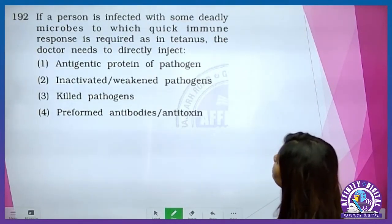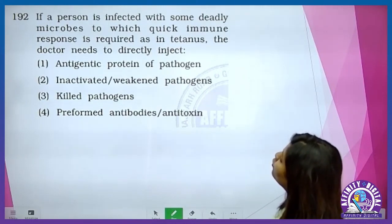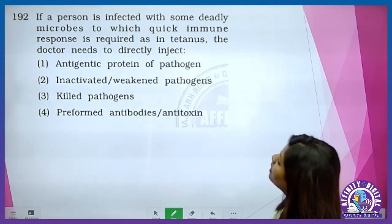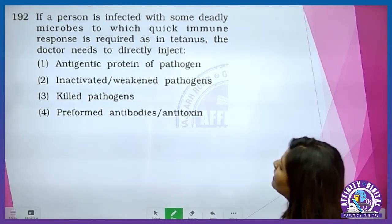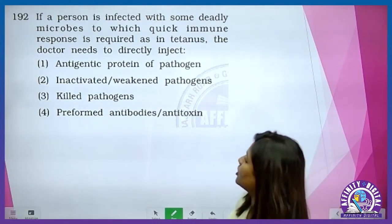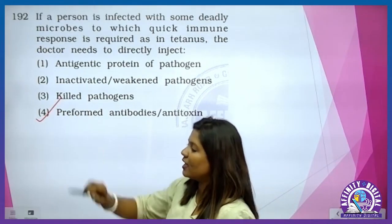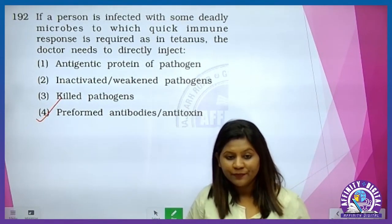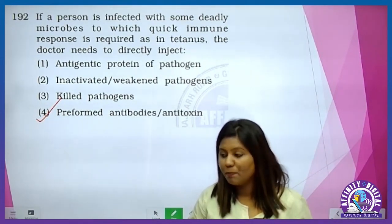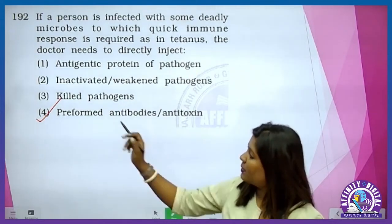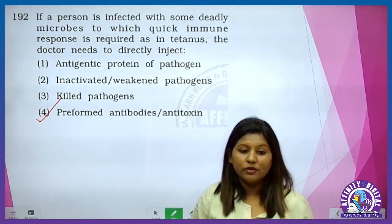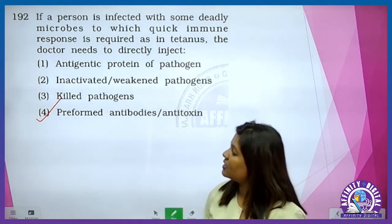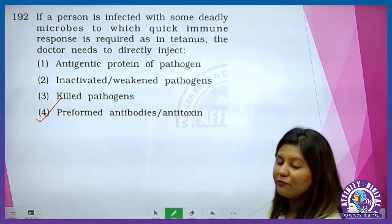If a person is infected with some deadly microbes to which quick immune response is required — as in tetanus — the doctor needs to directly inject: kya abhi time nahi hai, wound ho chuka hai. Us insaan ko passive immunity dena padega. Aur passive immunity ke liye chahiye hoga readymade antibodies — that is preformed antibodies.